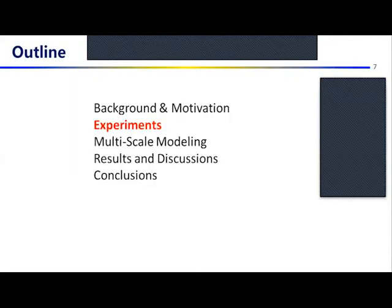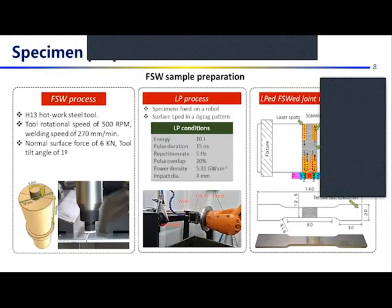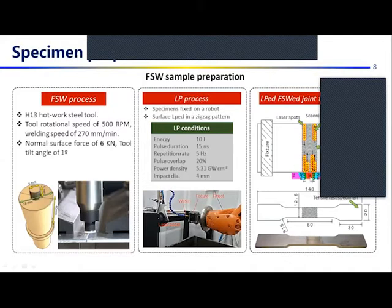For the experiments, the friction stir welding parameters are set for optimum welding mechanical properties. Laser peening parameters are set using nanosecond pulses to induce impacts of four-millimeter diameter spots on the surface with 20% overlap. As you can see in the picture on the right, laser peening is applied at the joint center and the TMAZ, where we observe the highest loss in material mechanical properties. Finally, tensile specimens are cut from the laser peened sample to observe the mechanical properties.